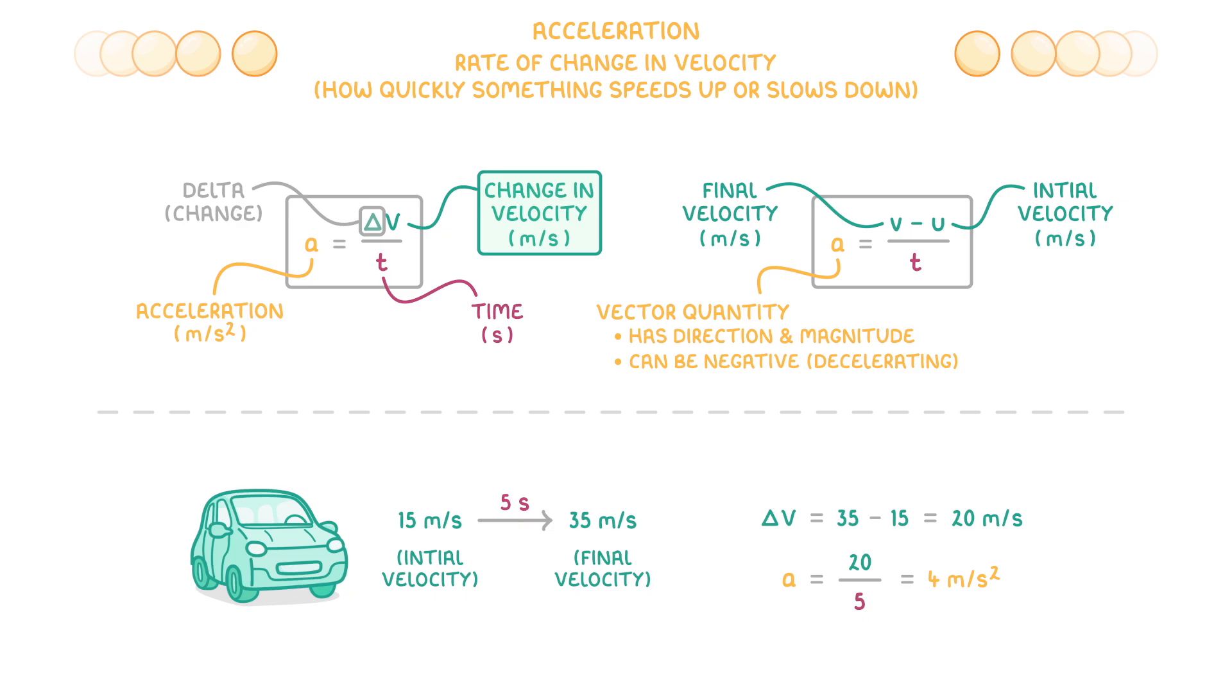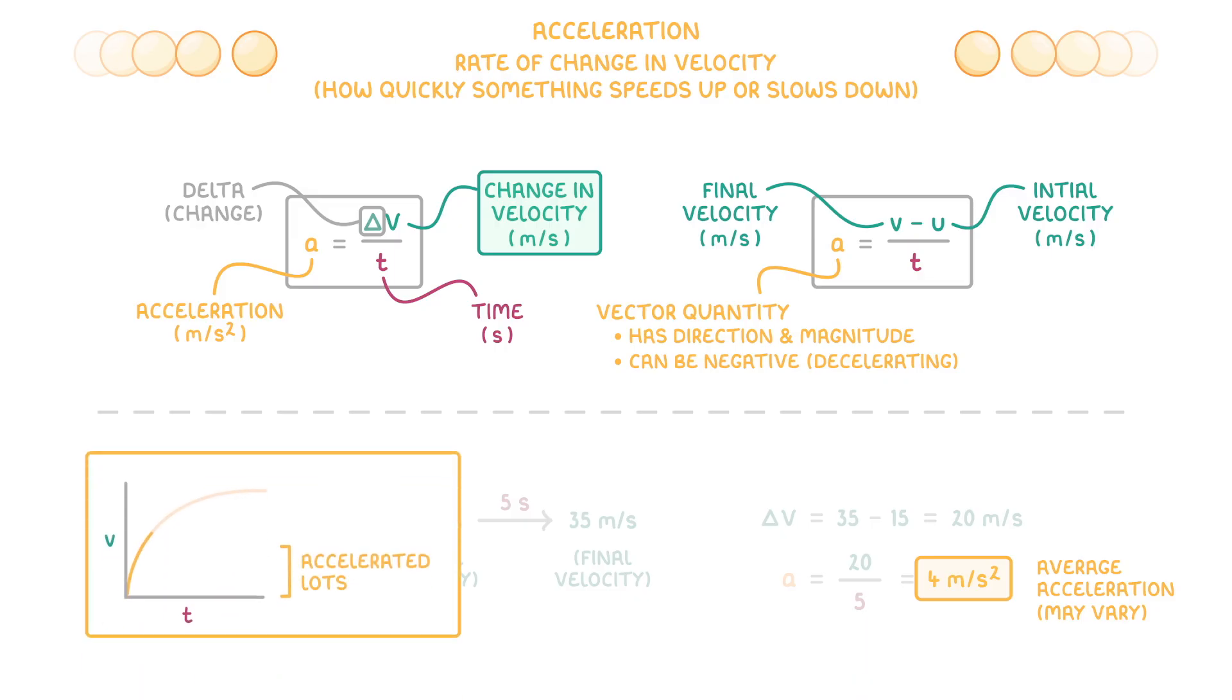Something else to point out is that our 4 meters per second squared acceleration is really the average acceleration over those 5 seconds. This is because in real life, the car's acceleration may have varied over those 5 seconds, rather than being 4 the entire time. For example, it might have accelerated lots in the first few seconds, but then accelerated more slowly during the last couple of seconds. If the car had accelerated at the same rate the entire time though, then we would call it uniform or constant acceleration.